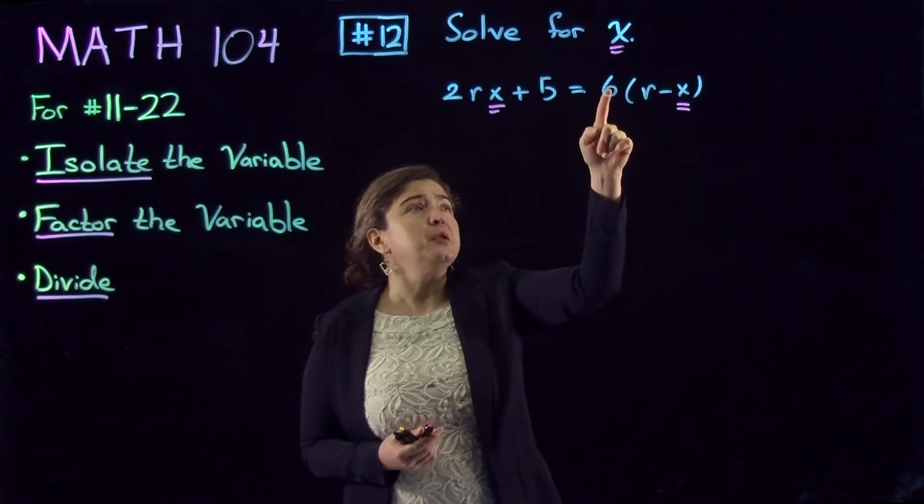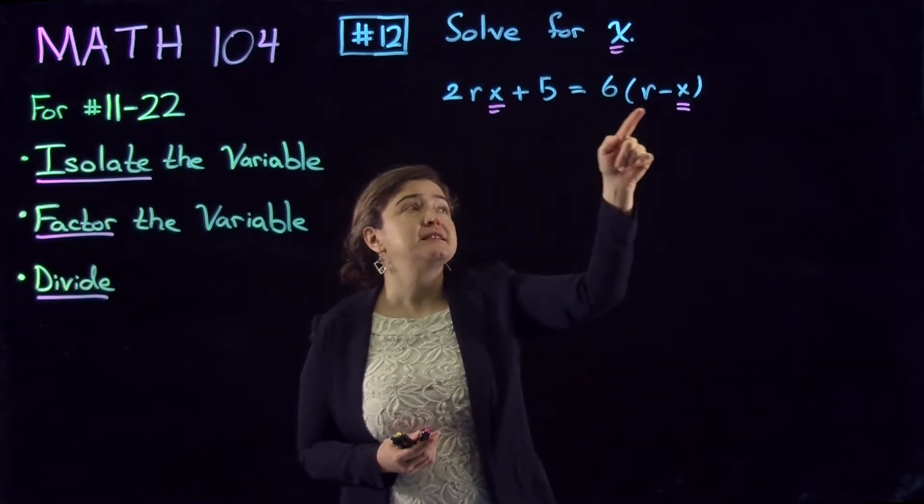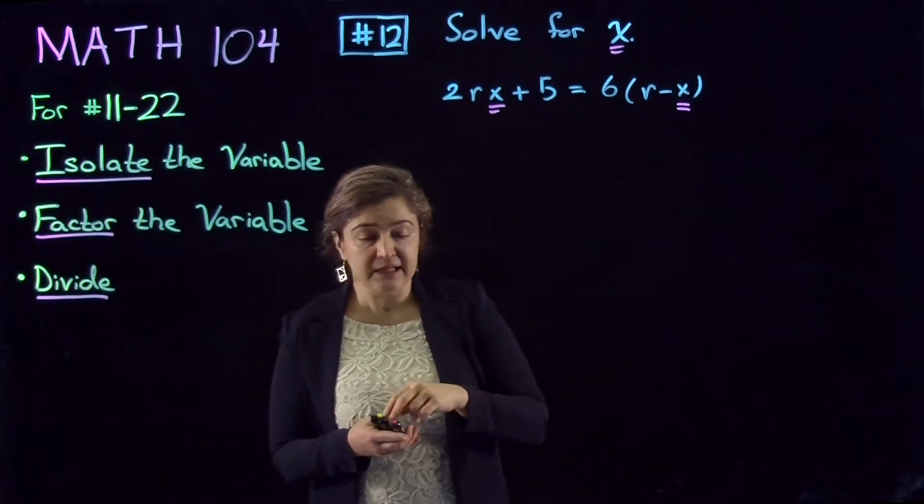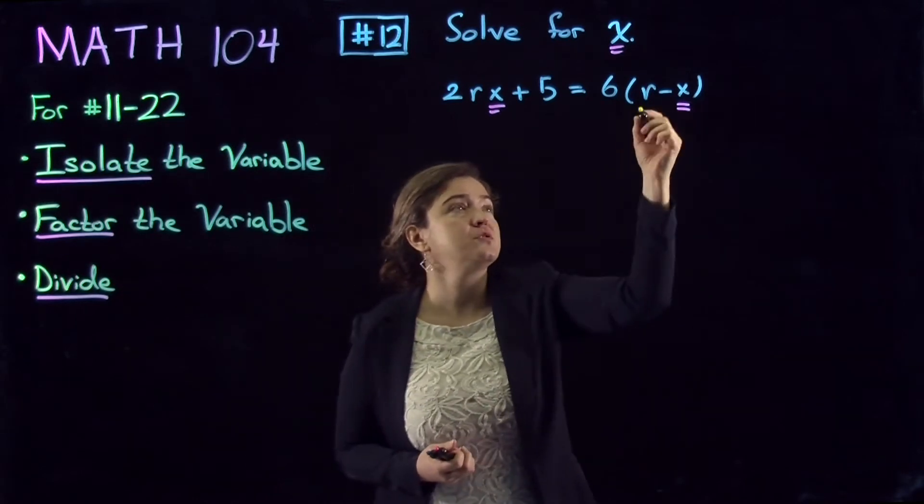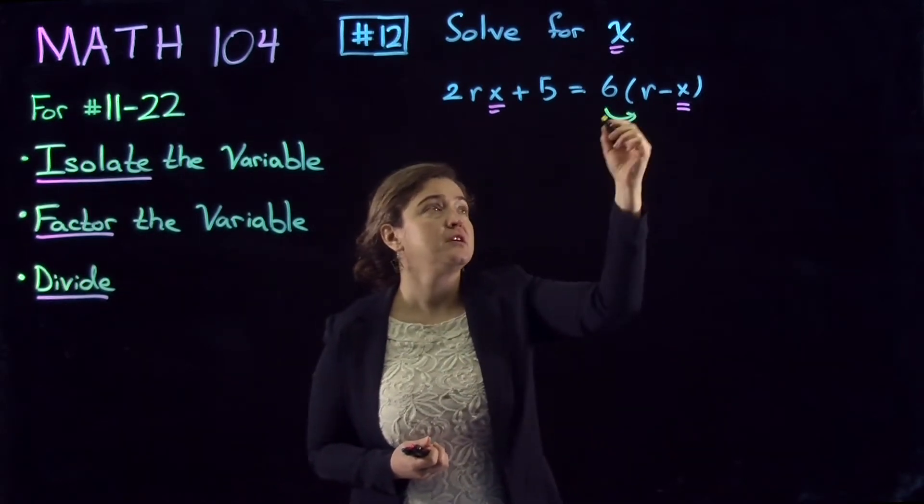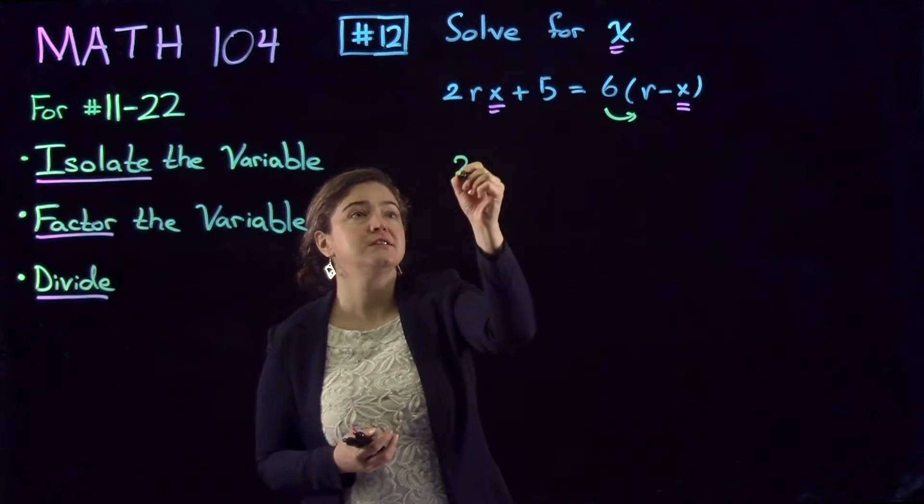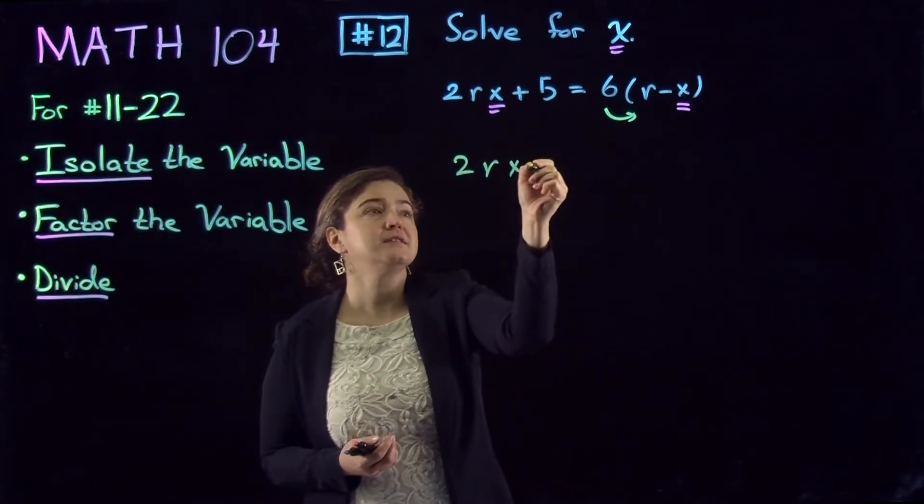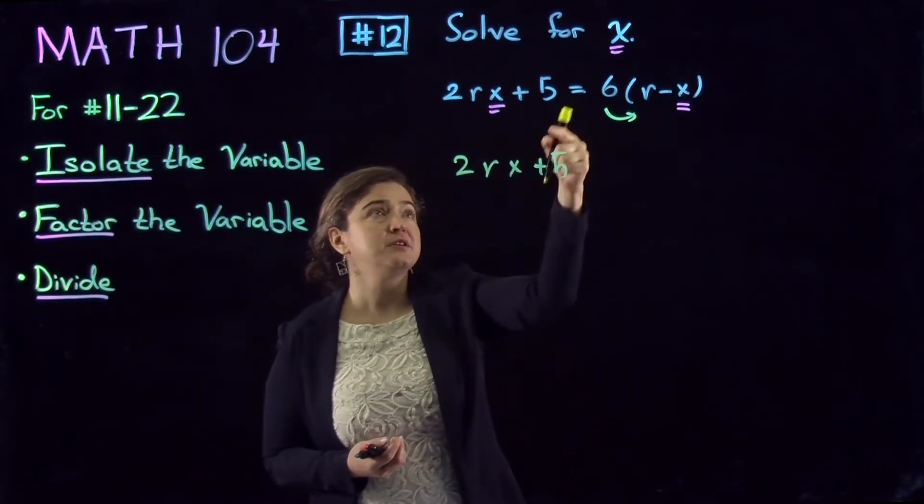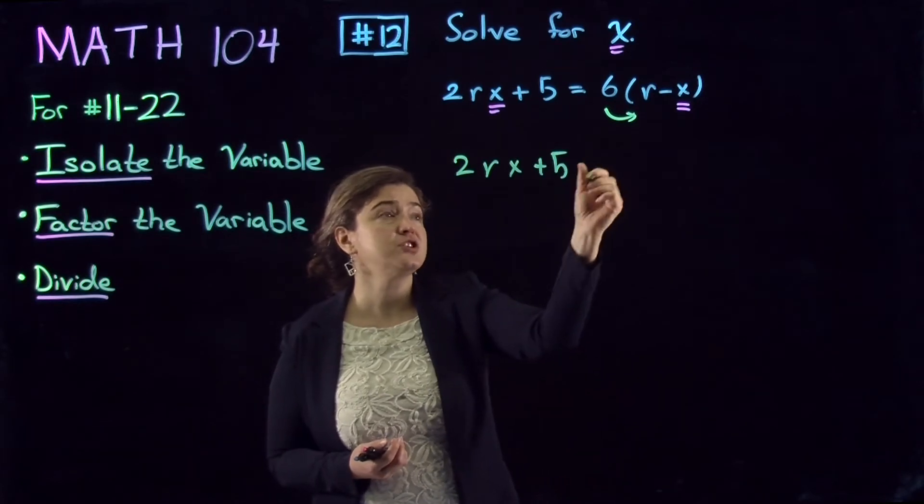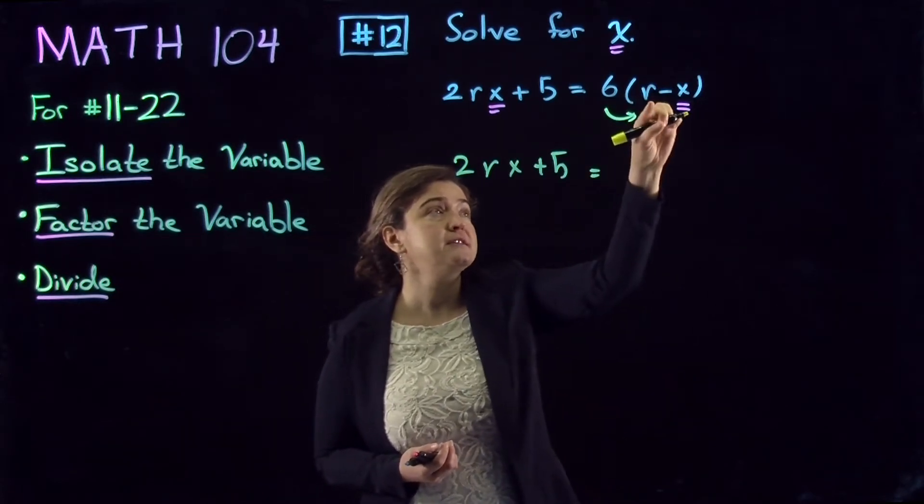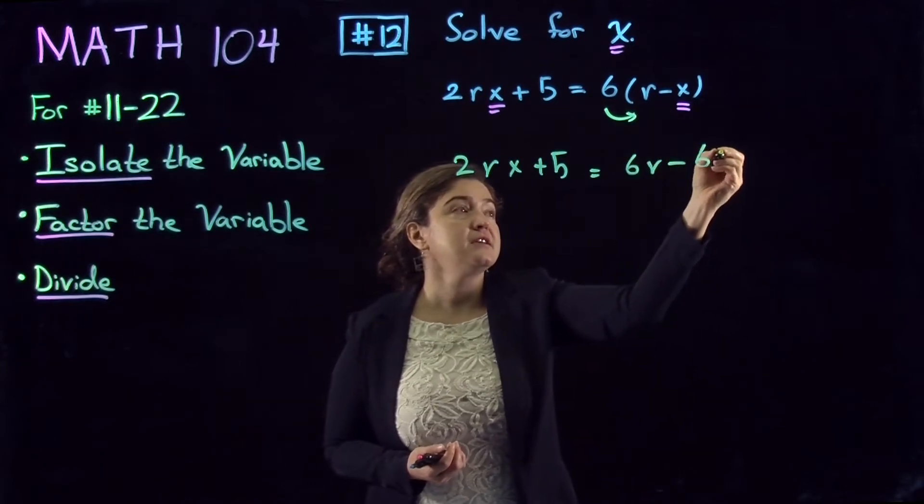But here I'm going to distribute 6 in as part of my isolation of X. So distributing into the parentheses, what I get is 2RX plus 5. This one is unchanged, and then this part is 6 times R minus 6X.